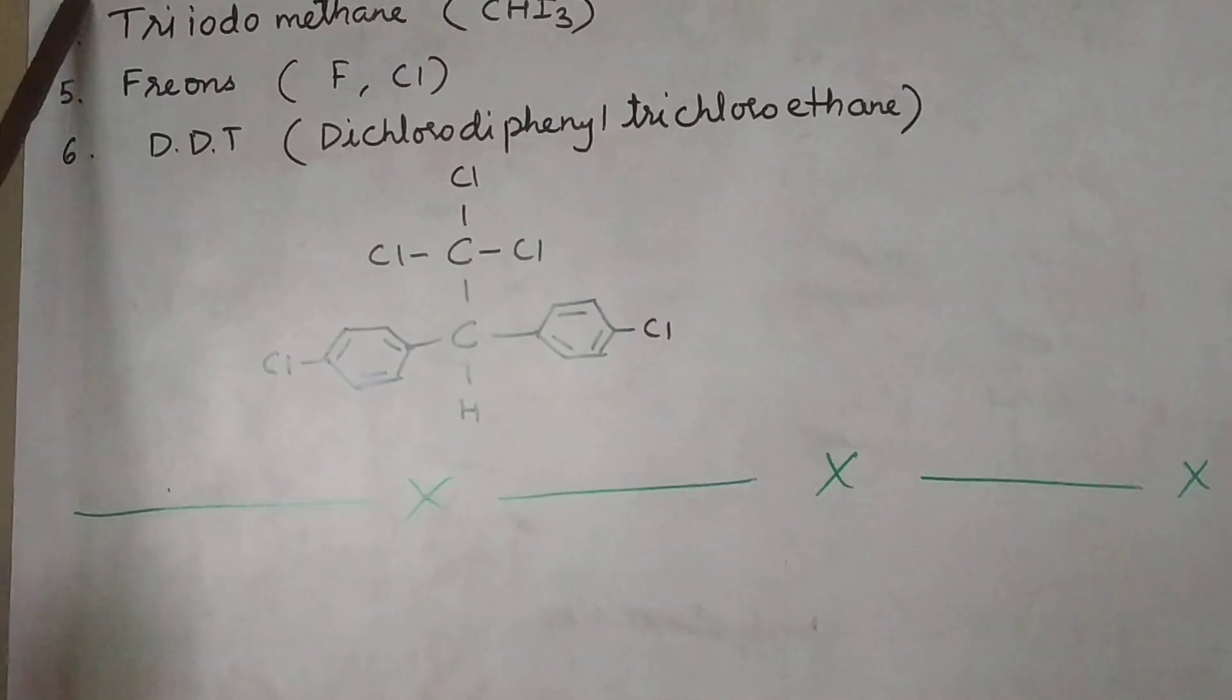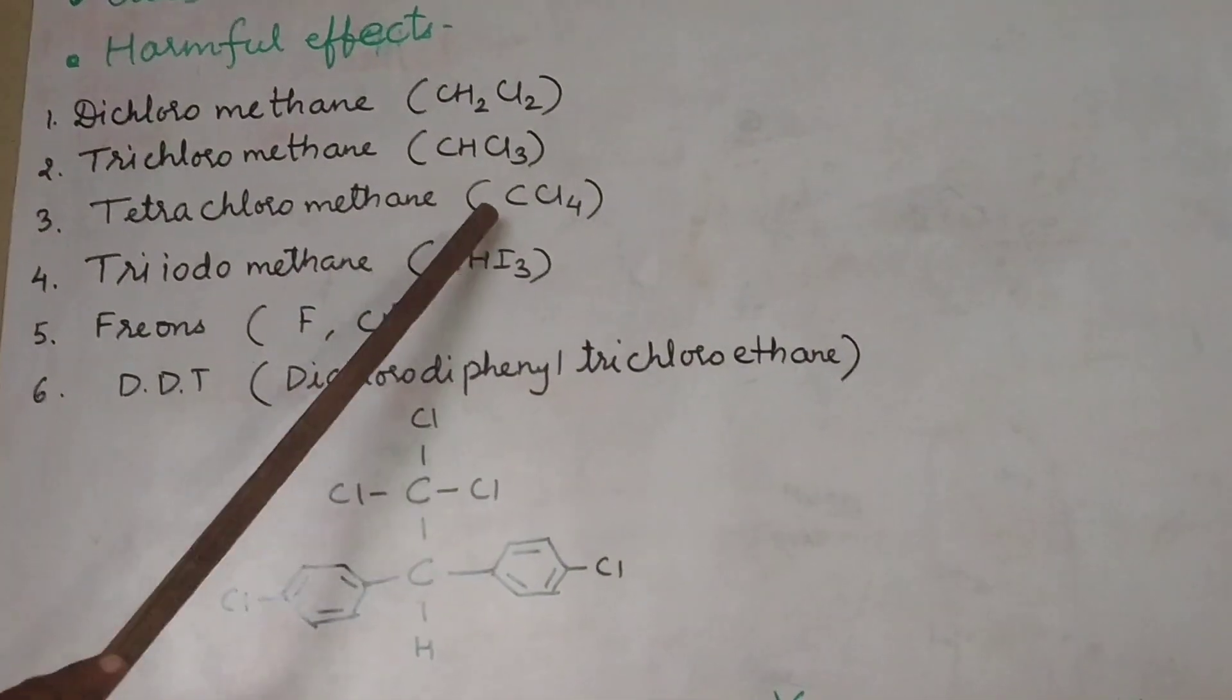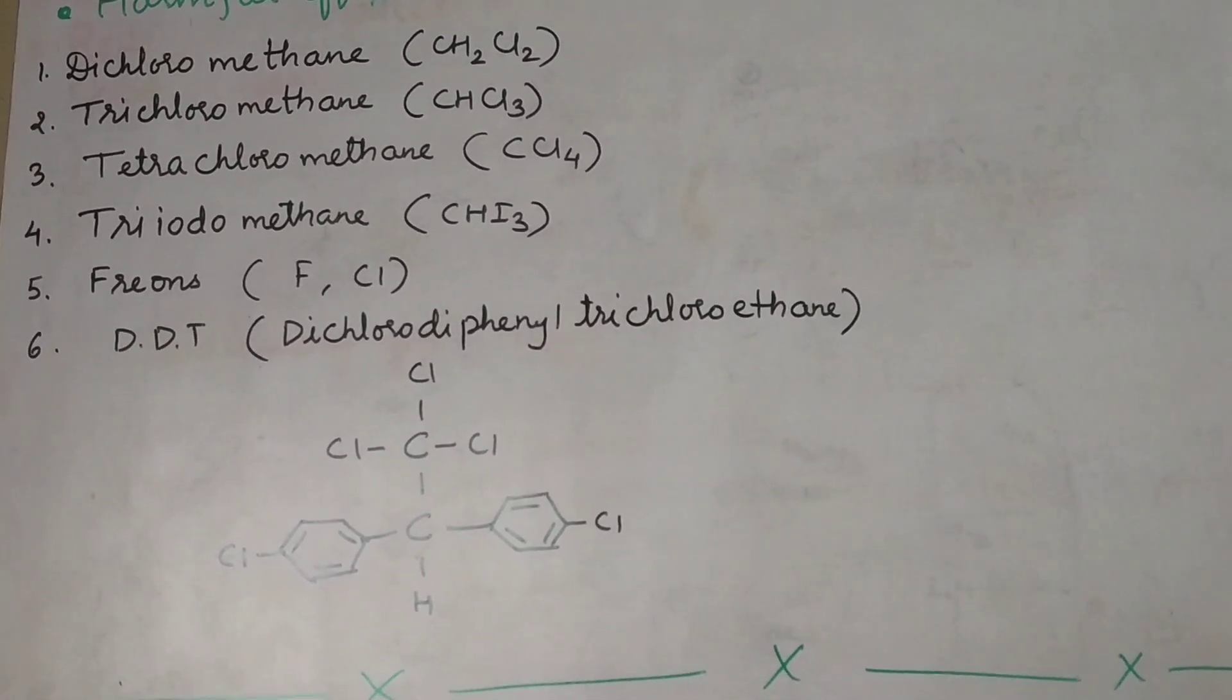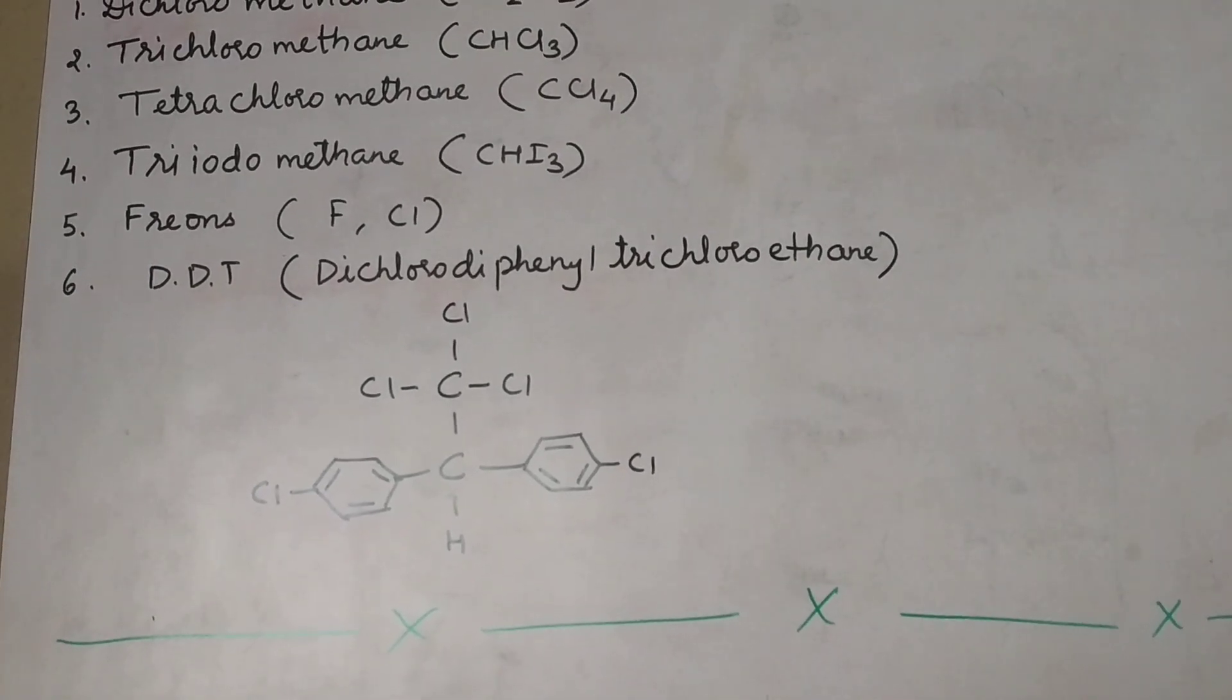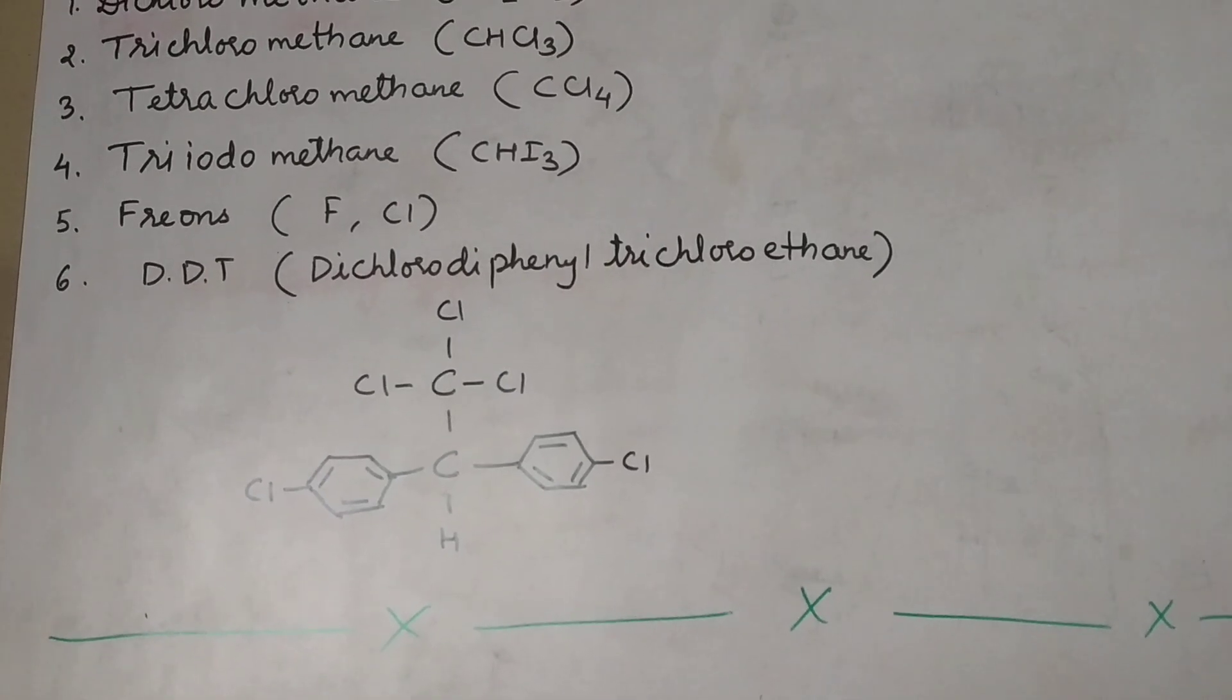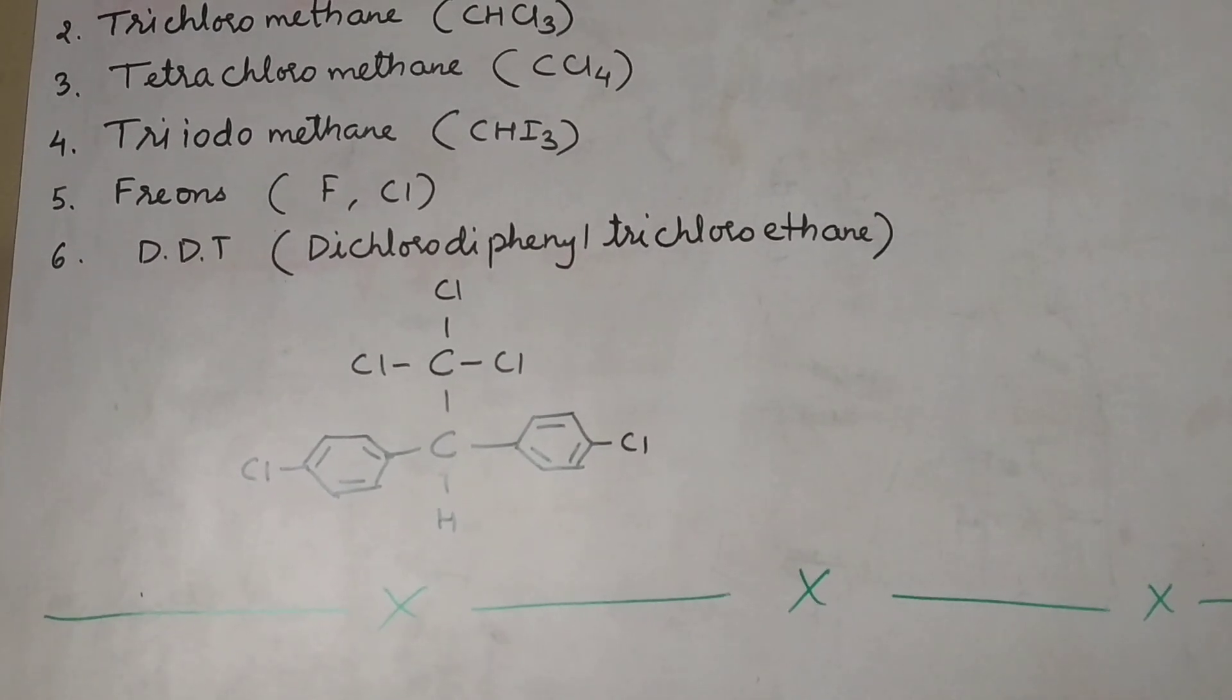The next compound is tetrachloromethane having formula CCl4 also called as carbon tetrachloride. Now, this CCl4 has uses as it can be used as solvent. It is a source of chlorine and it is used as cleaning agent. The harmful effects are it is toxic to liver. It can damage the central nervous system.